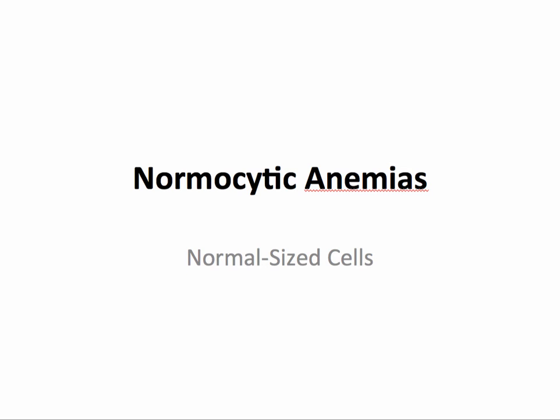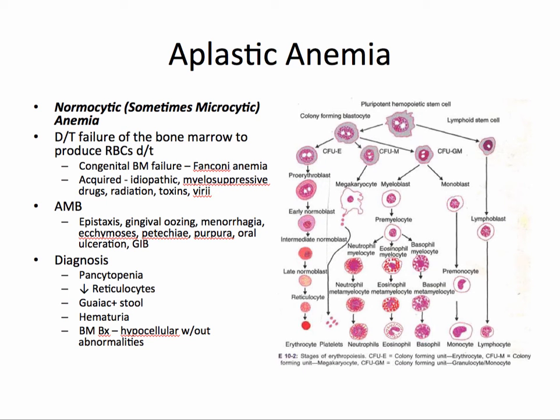Now we'll discuss normocytic anemias, which involve normal sized cells. Aplastic anemia is a normocytic and sometimes microcytic anemia due to the failure of bone marrow to produce red blood cells, due to either a congenital bone marrow failure or an acquired condition.